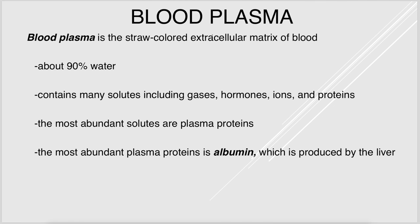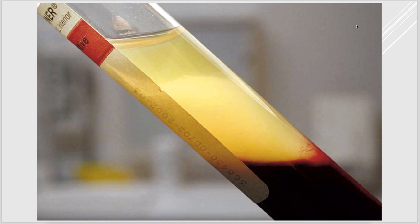Blood plasma is about 90% water. This is where you're going to find all of your ions, glucose, hormones, and plasma proteins such as albumin, which is the most abundant plasma protein. And here you can see the plasma is straw-colored.